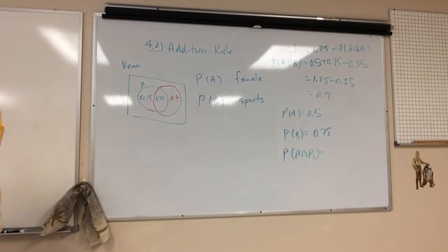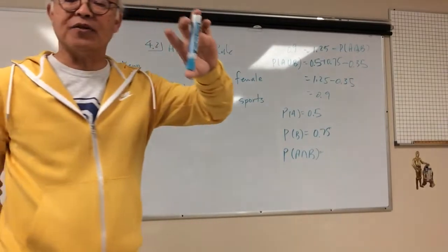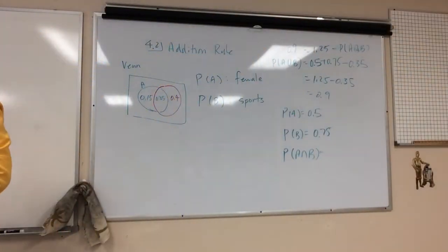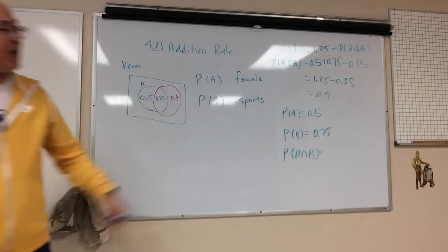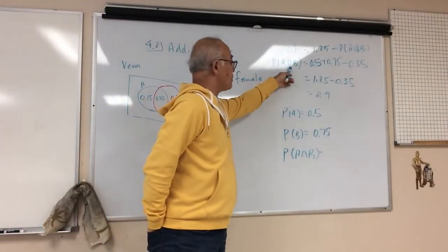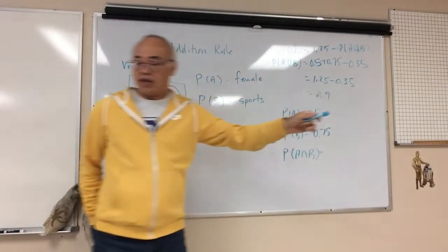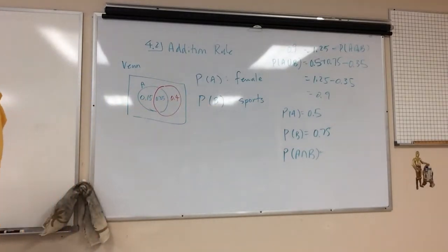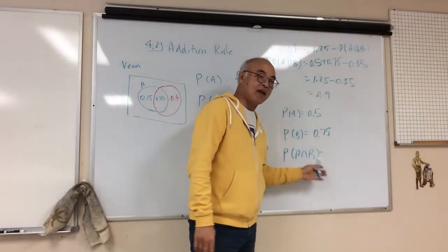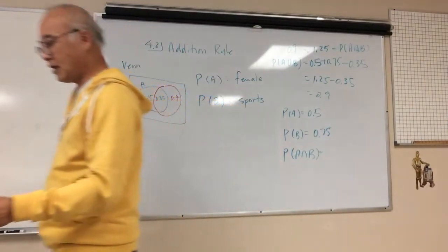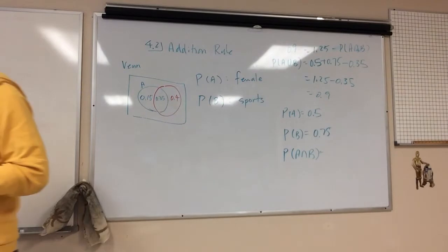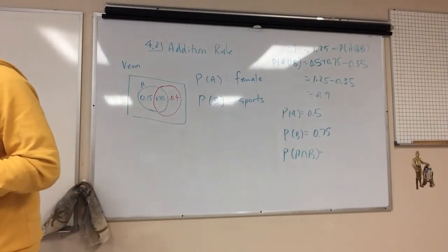So let's do the formal addition rule. So formal addition rule, there's a green box on the bottom. Read that. So the probability of A or B is the probability of A plus the probability of B, subtracting the probability A and B.